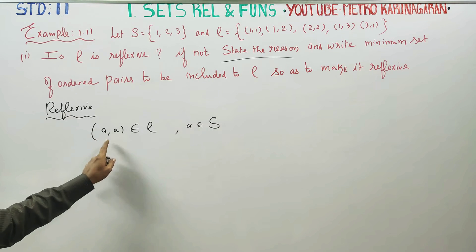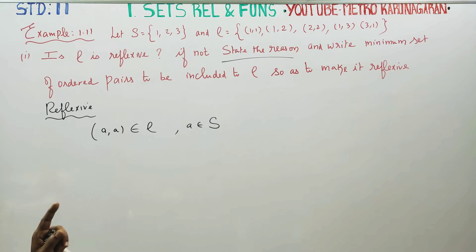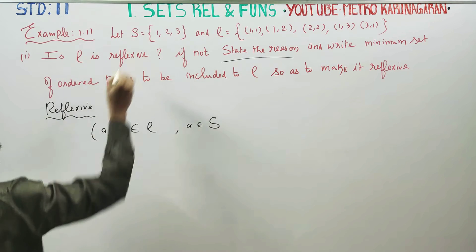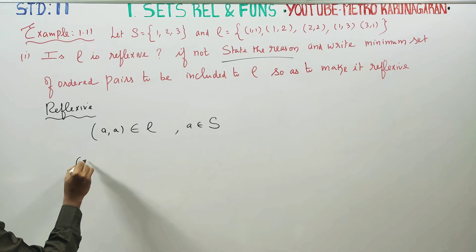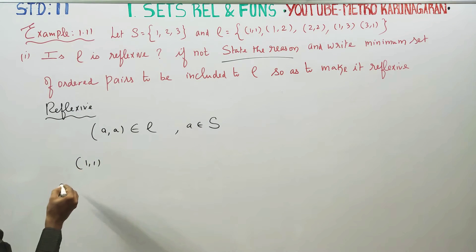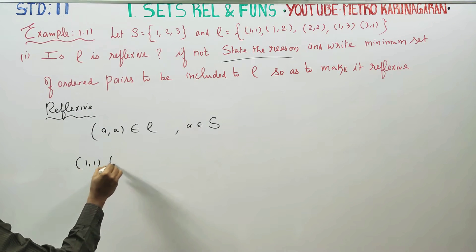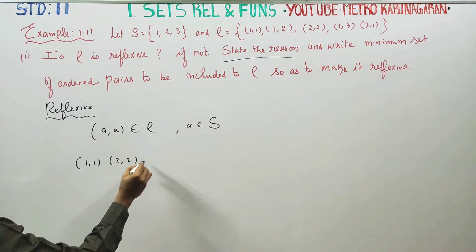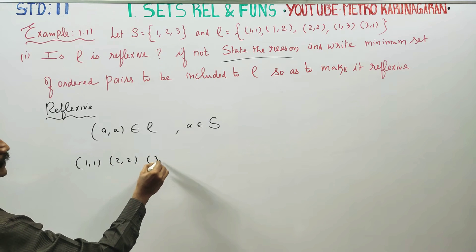Reflexive means same-same elements. The same-same element pairs are: (1,1), (2,2), and (3,3).